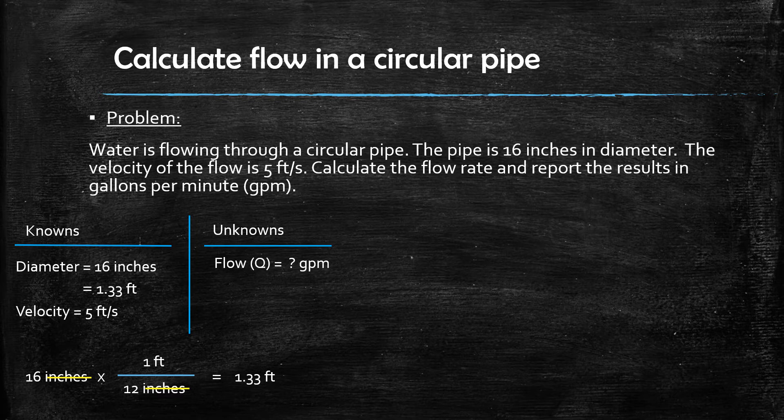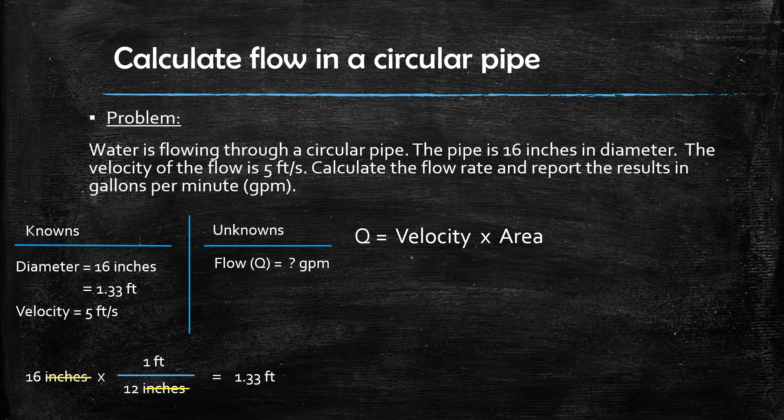We are now ready to calculate the answer. The flow rate is equal to the velocity multiplied by the cross-sectional area. The area of a circle is given by 0.25 multiplied by pi or 3.14 multiplied by the diameter and multiplied by the diameter again.